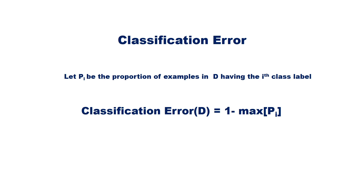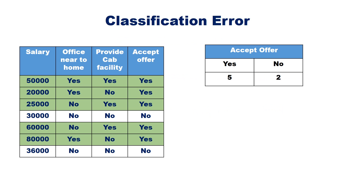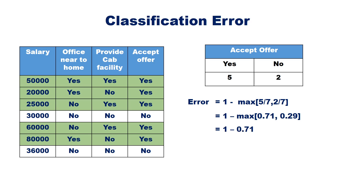Another impurity measure is the classification error, given by: 1 minus max(Pi). For the dataset, classification error = 1 minus max(5/7, 2/7) = 1 minus max(0.71, 0.29) = 1 minus 0.71 = 0.29. Hence, the classification error for the given dataset is 0.29. Let us continue the discussion on decision trees in subsequent videos.